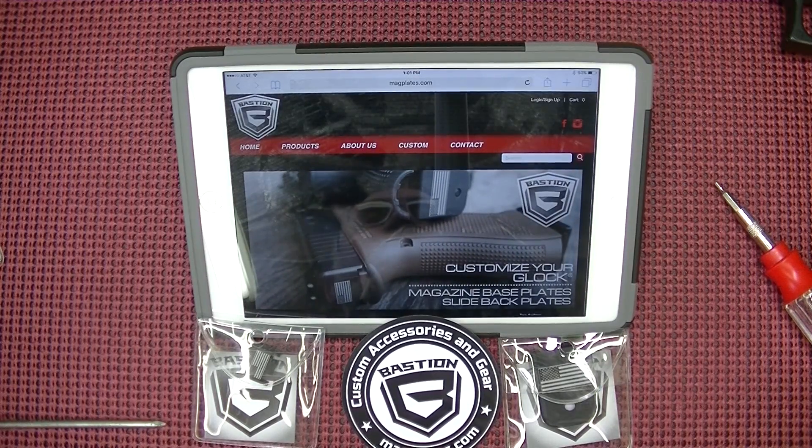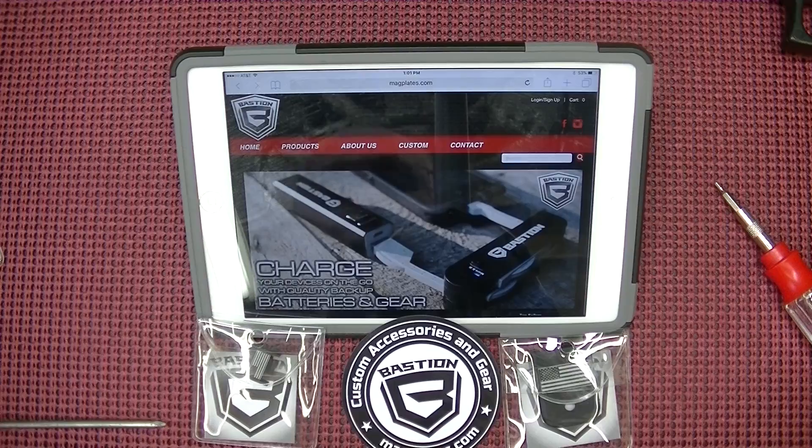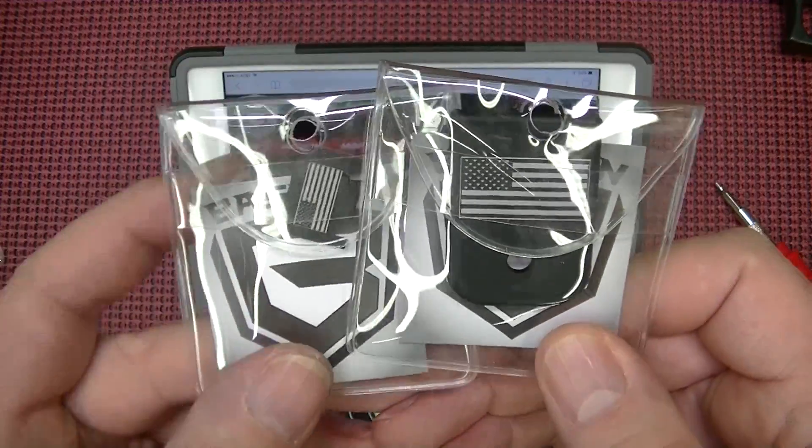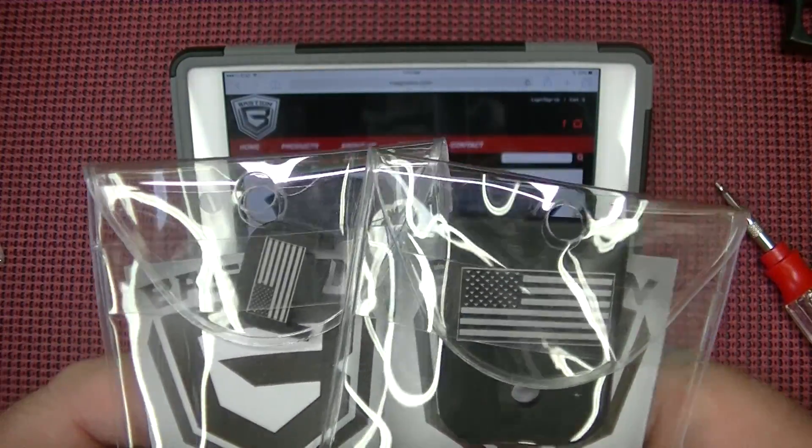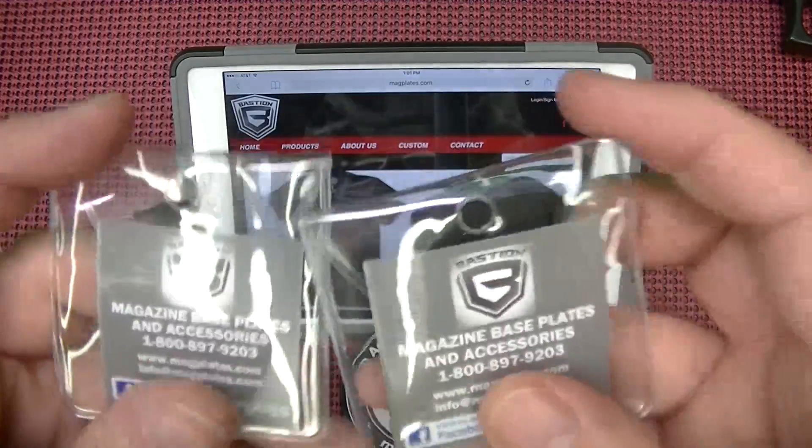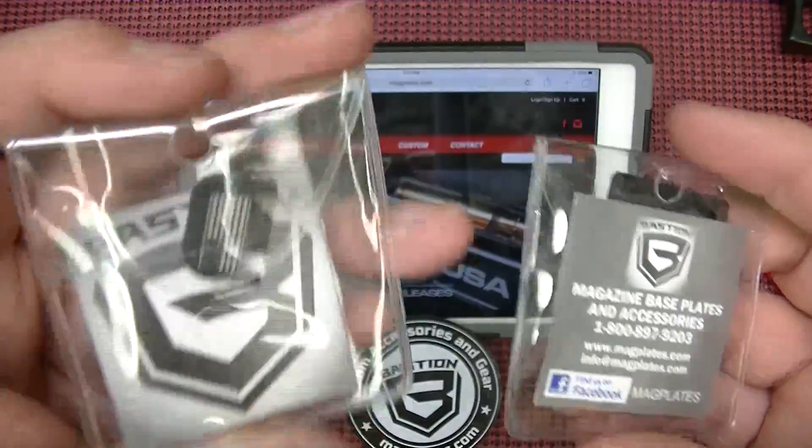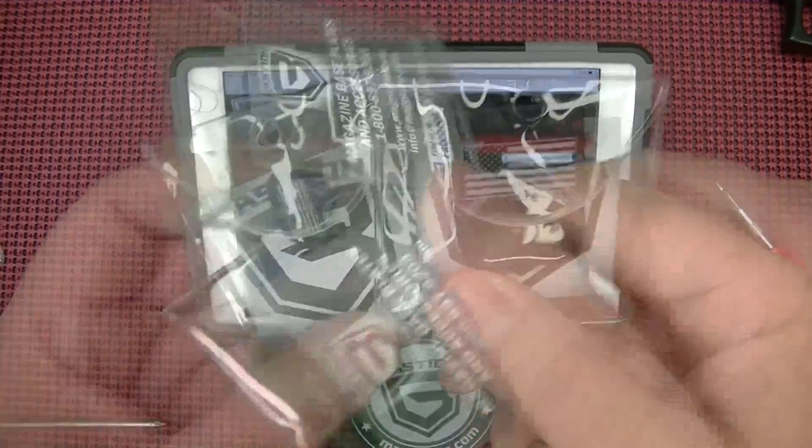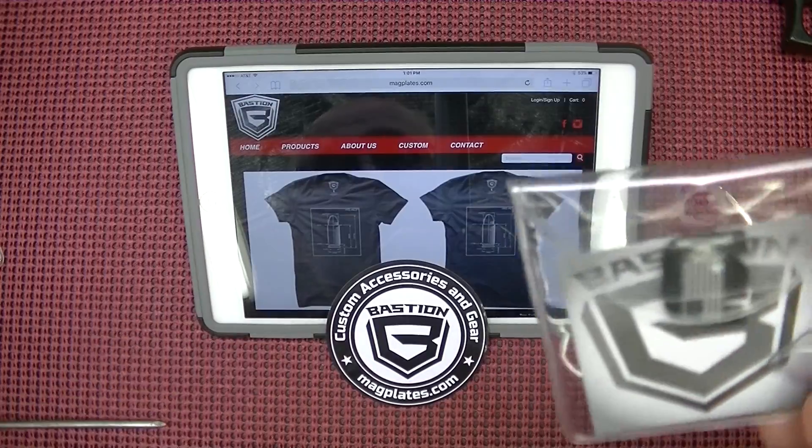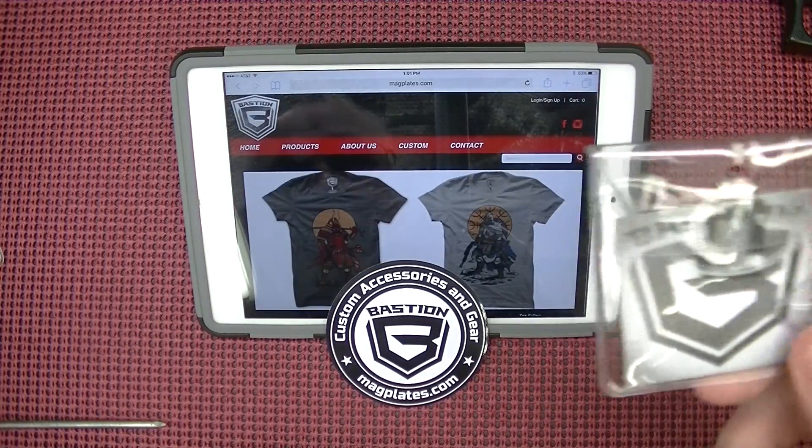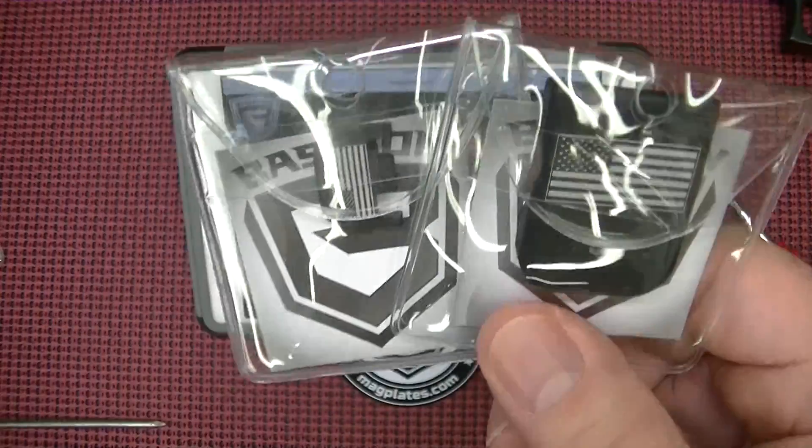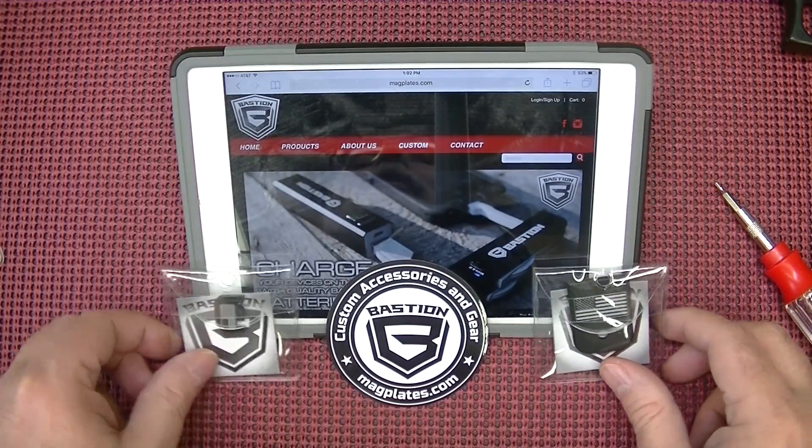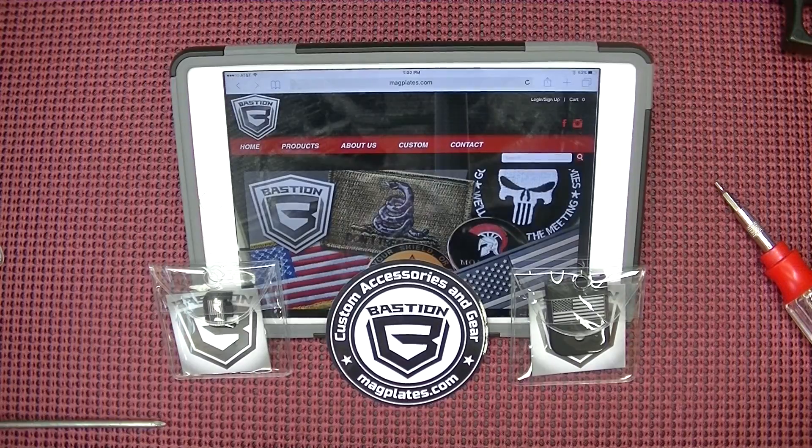So by all means, check these guys out. Now, we're going to have a flash giveaway. If you own a Glock and you would like to get in on this flash giveaway and have a chance on winning a back slide plate and a base plate for a magazine for a Glock, this is courtesy of Bastion Custom Accessories and Gear, Magplate.com. How you're going to win this is just use Bastion in your comment. Make it pretty simple. Use Bastion in your comment. Get in on this giveaway.